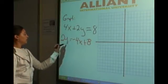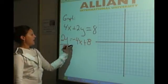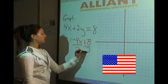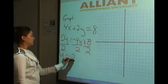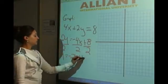Now we need to get y by itself. We are going to do that by dividing everything by 2, leaving us with y equals negative 2x plus 4.